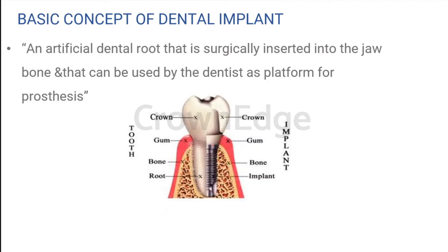Before I move on directly to the prosthetic options, I'll be doing a small rehearsal of the surgical options so that your concepts and your prosthetic options are clear as well. Let me just do a quick revision about the surgical aspect before I delve into the prosthetic scenario. The implant basically involves different fragments or components. This is the screw portion, which is going to be embedded directly into the bone.